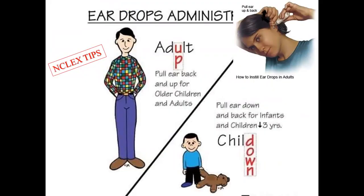Here is a memory trick: when your baby is less than three years old — CHILD, D for Down — pull the ear down and back for infants and children less than three years old. For adults or anyone more than three years old — ADULT, U for Up — pull the ear back and up for older children and adults.